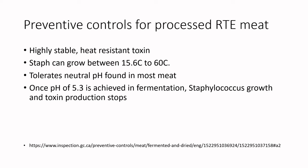The preventive controls for ready-to-eat meat with respect to Staphylococcus: first, it produces a highly stable, heat-resistant toxin, so we can't just cook it out. Staph can grow between 15.6°C and 60°C, so we need to be aware of that temperature danger zone — 15.6°C is the bottom end. It also tolerates neutral pH, which is found in most meats and many dairy products.